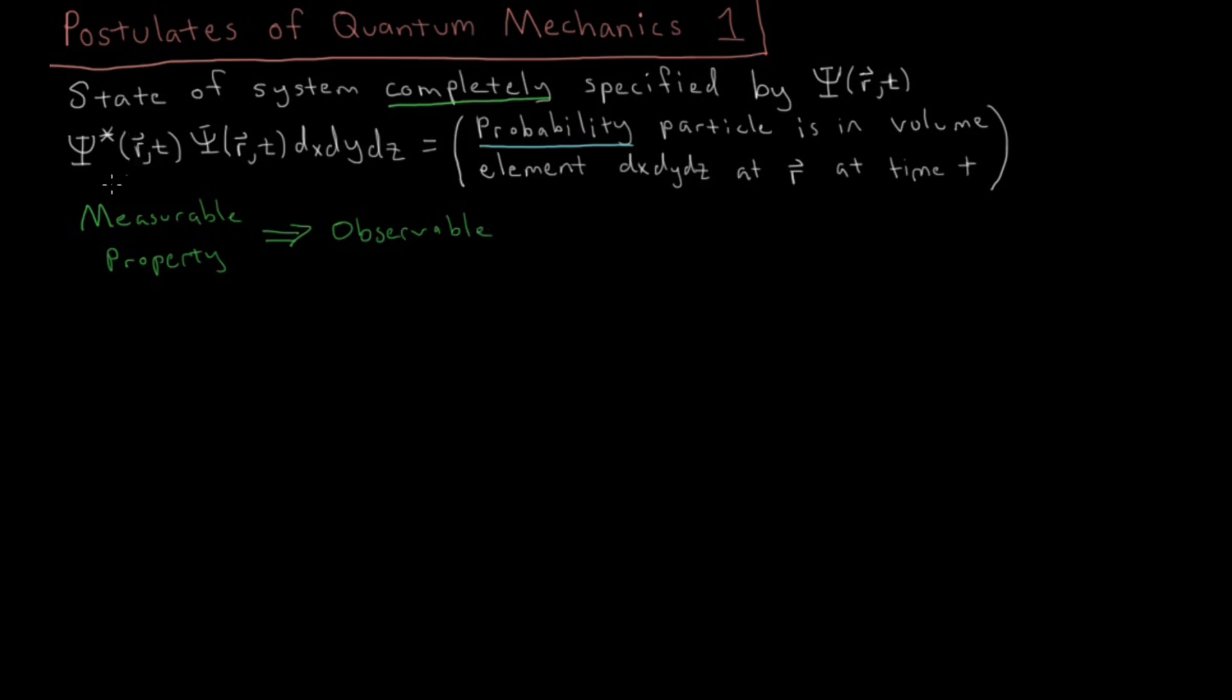And in quantum mechanics, if you know the wave function, then you can calculate every observable which there is, as we saw: position, momentum, position squared, momentum squared, energy, kinetic energy, potential energy. Whatever physical property you want that can be measured, you can observe it.